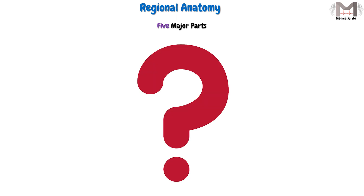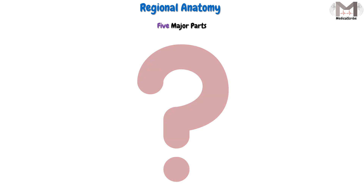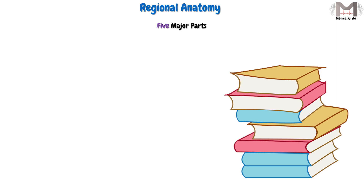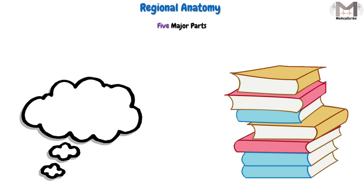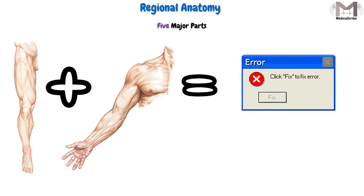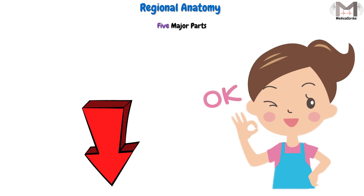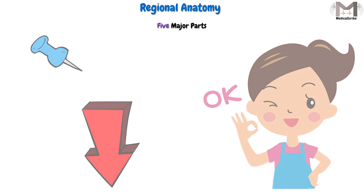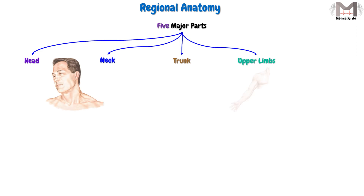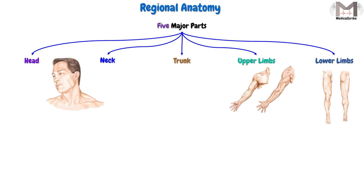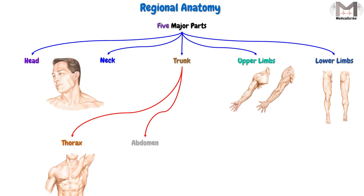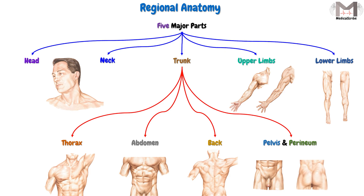In regional anatomy, we divide the human body into five major parts. Someone might ask why five and not six or four — honestly, I haven't found a reference clarifying this, but I think it's because every part has its own structural and functional differences from the others, so we can't merge two into one. These five parts are the head, neck, trunk, upper limbs, and lower limbs. The trunk is further divided into the thorax, abdomen, back, and pelvis with perineum.